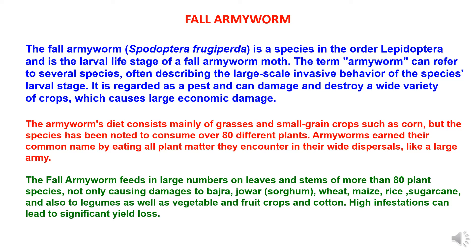Army worms earned their common name by eating all plant matter they encounter in their wide dispersals, like a large army. The Fall Army Worm feeds in large numbers on leaves and stems of more than 80 plant species, causing damage not only to bajra, jowar, wheat, maize, rice, sugarcane, but also to legumes, vegetable and fruit crops, and cotton. High infestations can lead to significant yield loss.